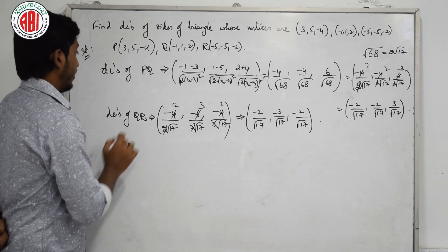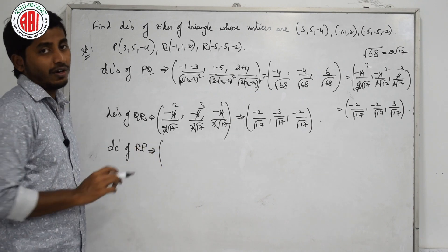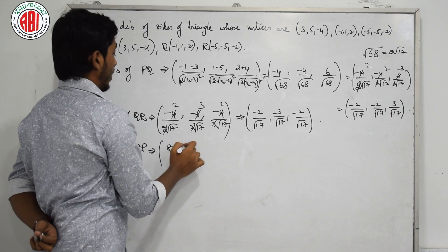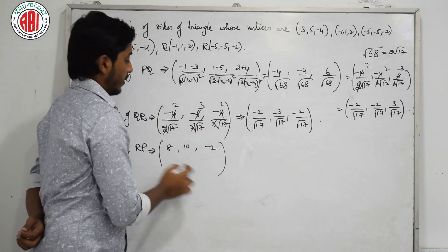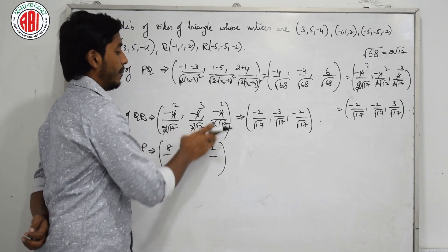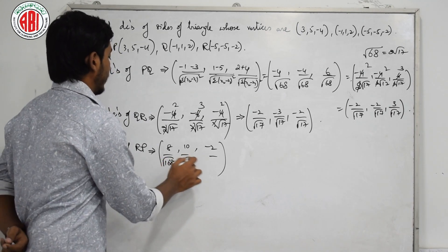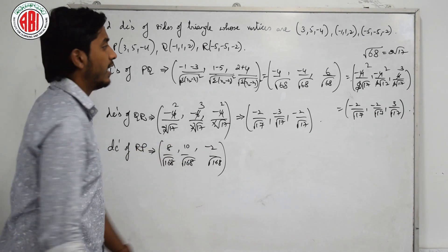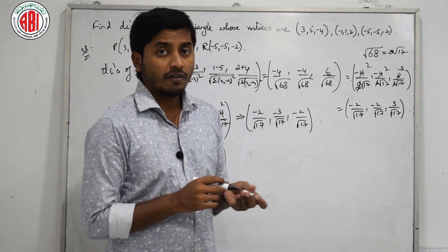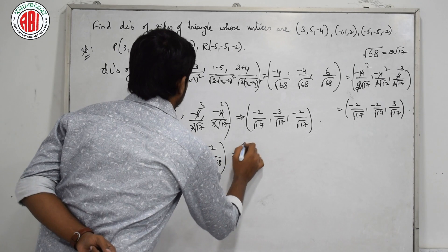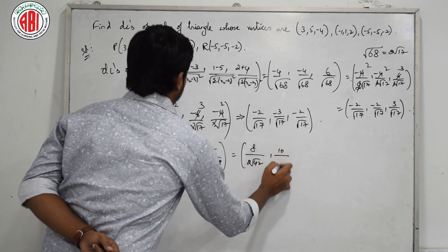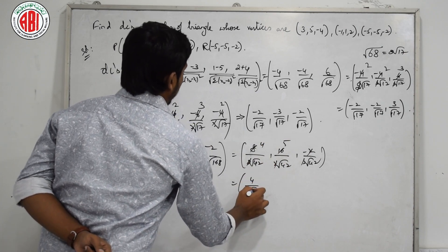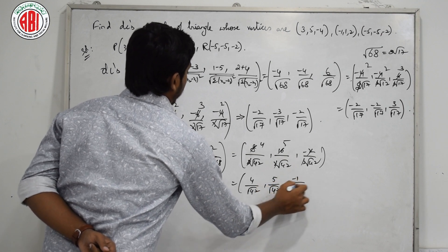Now let us find the DCs of the third side, RP. The differences are: 3 plus 5 equals 8, 5 plus 5 equals 10, minus 4 plus 2 equals minus 2. The denominator squared is 64 plus 100 plus 4, which is 168. Root 168 equals 2 root 42. So the DCs are 8 by 2 root 42, 10 by 2 root 42, minus 2 by 2 root 42, which simplifies to 4 by root 42, 5 by root 42, minus 1 by root 42.